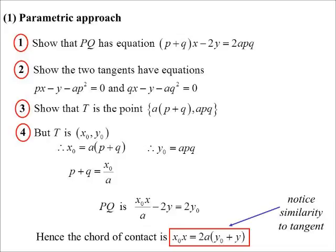All right. That's a lot of work when you think about it. Look at all the steps we had to go through. We had to show the chord PQ had that equation. Find the equations of the tangents. Find the points of intersection and then substitute it. That's the parametric approach. It tends to be the approach people are very comfortable with, but there's a quicker way.